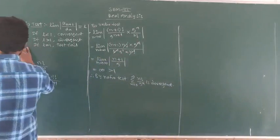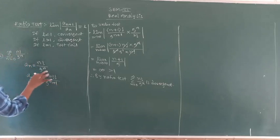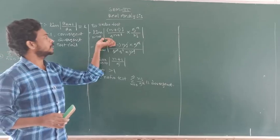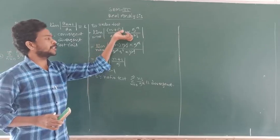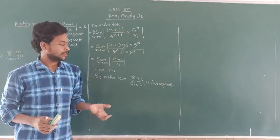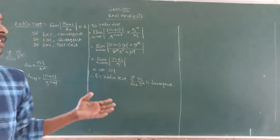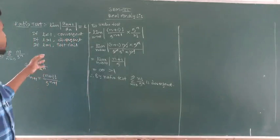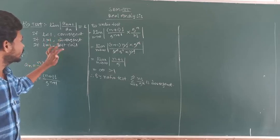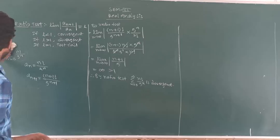You should take the inner part as a_n, then find a_{n+1}. Then apply the limit as n tends to infinity of a_{n+1} by a_n. If the answer is less than 1, it is convergent; greater than 1, divergent; equal to 1, test fails. Next problem.